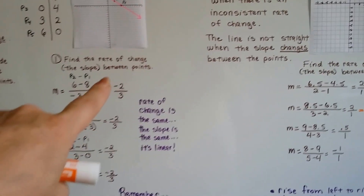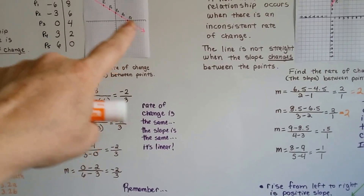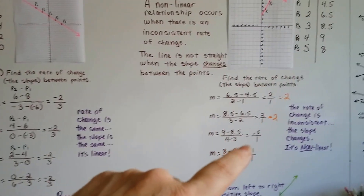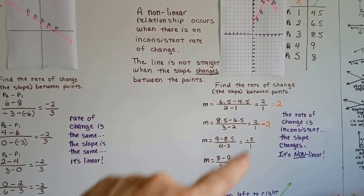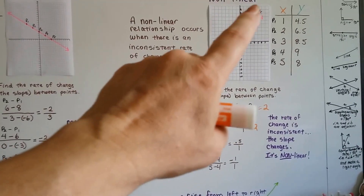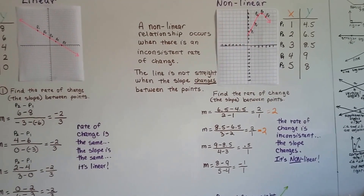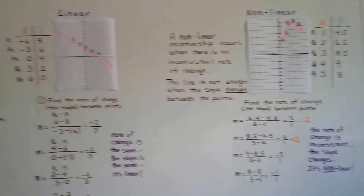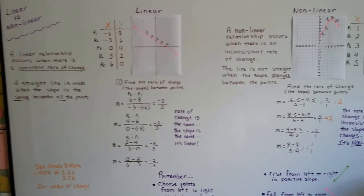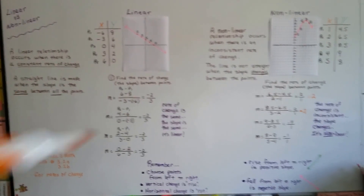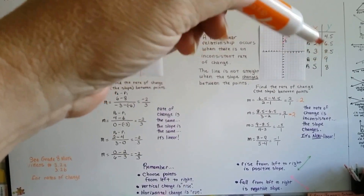As long as the slope was the same between all the points, we knew it was a nice pretty straight line. And the minute it became inconsistent and we got different measures for the slope, we knew this line was starting to change — it's non-linear. So that's how you can tell if it's linear versus non-linear. You can use the slope formula. You can even look at the table — we could have just looked at it and told that these numbers are not consistent.